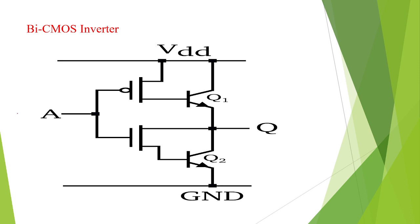Here you can see: I am giving 1 input. Here it is the PMOS transistor — source, gate, drain — and this is the NMOS transistor — source, gate, drain. Now when we are giving 1, here there is no sufficient VGS to turn on the PMOS, so transistor T1 should go to off condition.